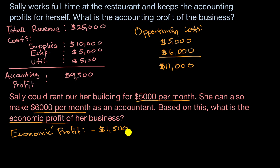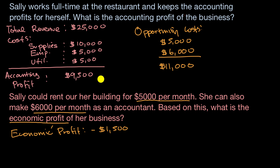If we had more information, maybe she hates being an accountant, or maybe there's a benefit from working at the burger business — more flexibility with her time, being self-employed, not having to answer to a manager. If that were the case, it would change the calculations, because there would be an extra benefit from running her burger joint. But based on the information we have, it doesn't seem rational for her to continue.